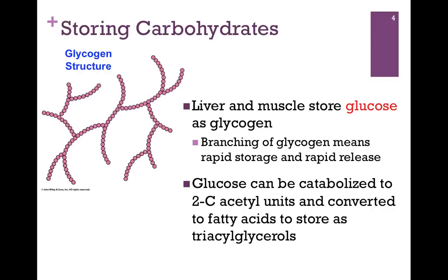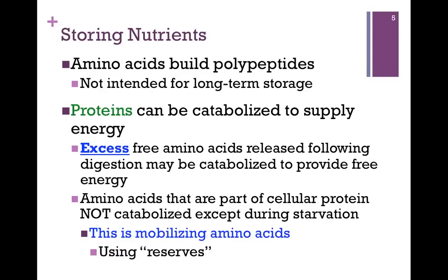Now what happens if we eat excessively on carbohydrates? Well, we can only store so much as glycogen, and the rest is going to get broken down to acetyl units — that's a two-carbon compound. That gets converted to fatty acids and stored as triglycerides. So in other words, if we overeat carbohydrates, it gets stored as fat.